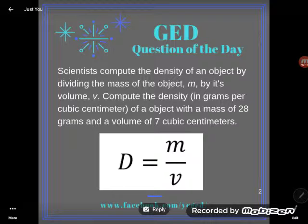Scientists compute the density of an object by dividing the mass of the object, m, by its volume, v. Compute the density in grams per cubic centimeter of an object with a mass of 28 grams and a volume of 7 cubic centimeters.